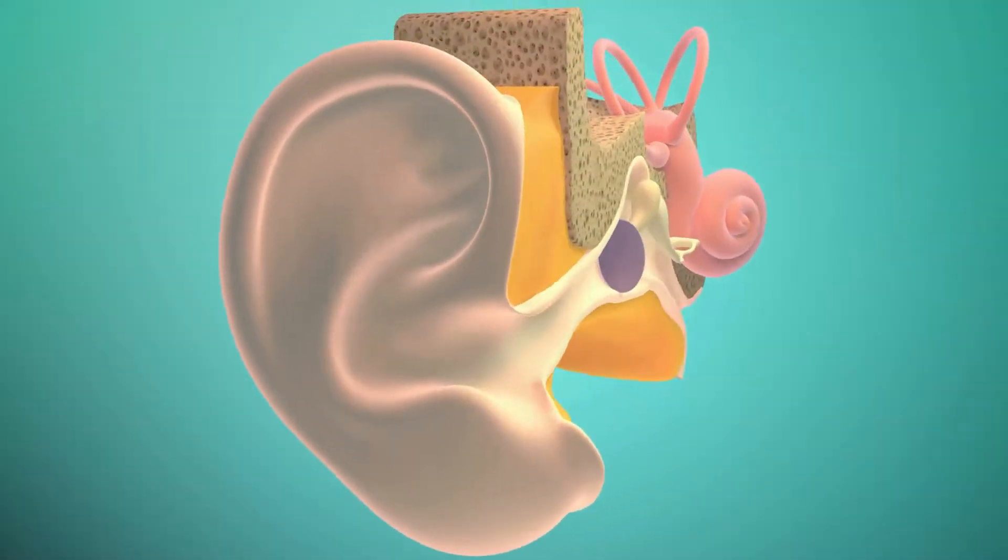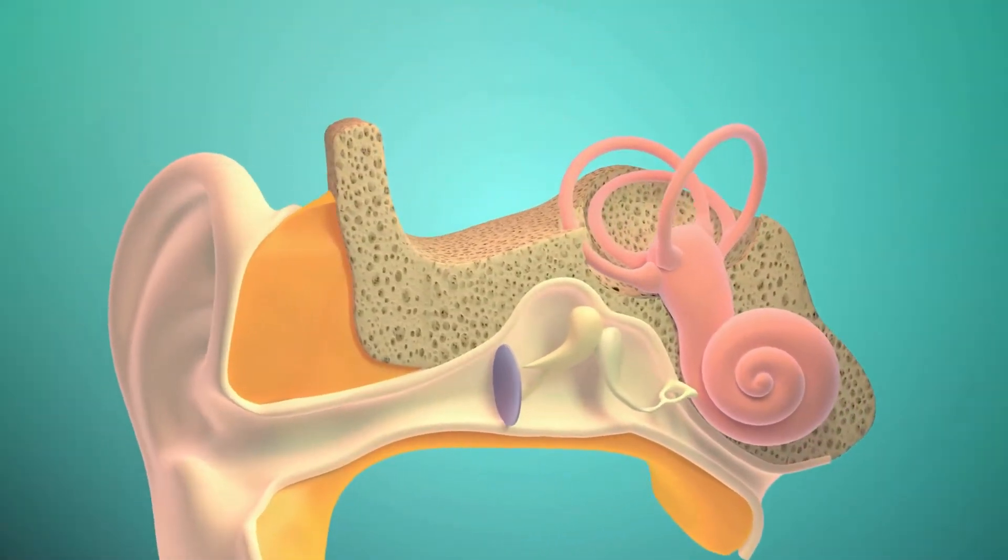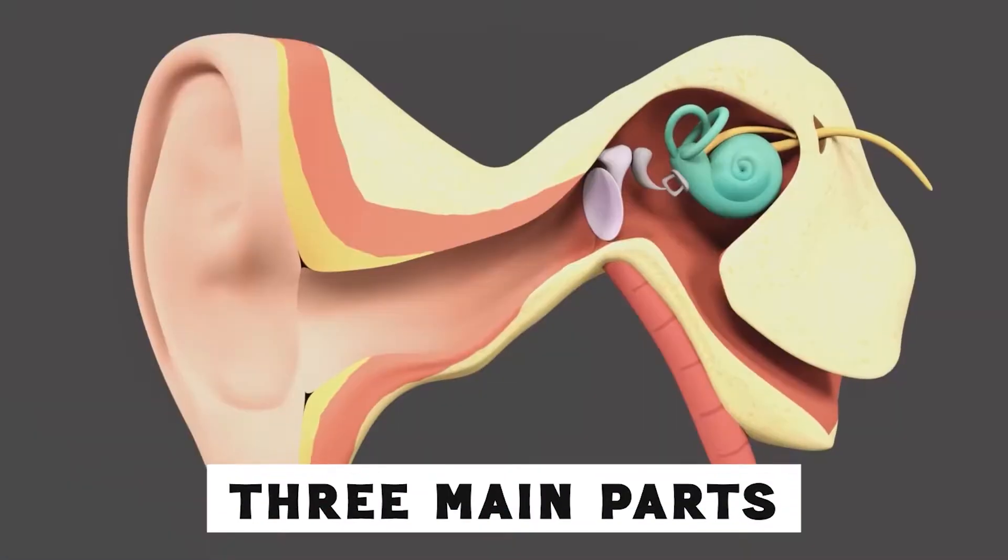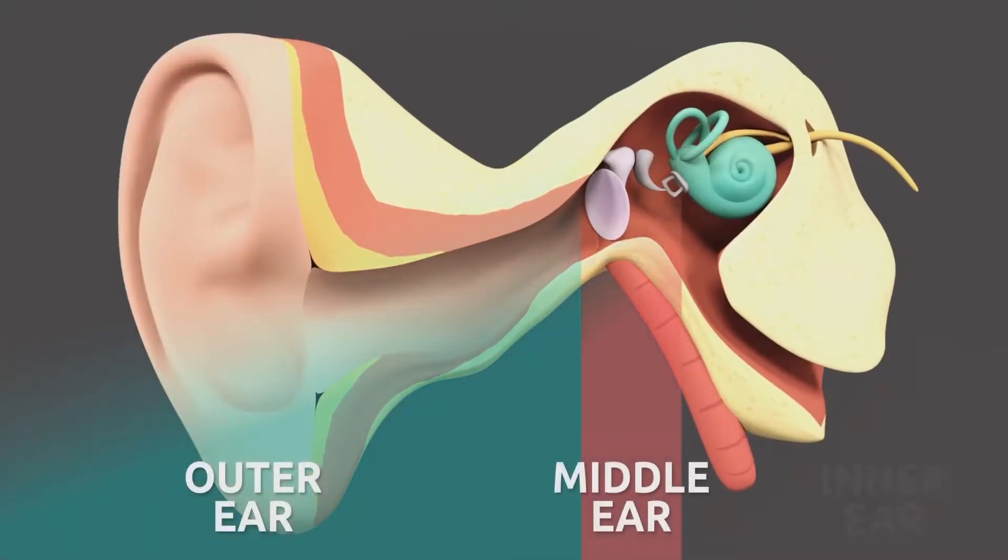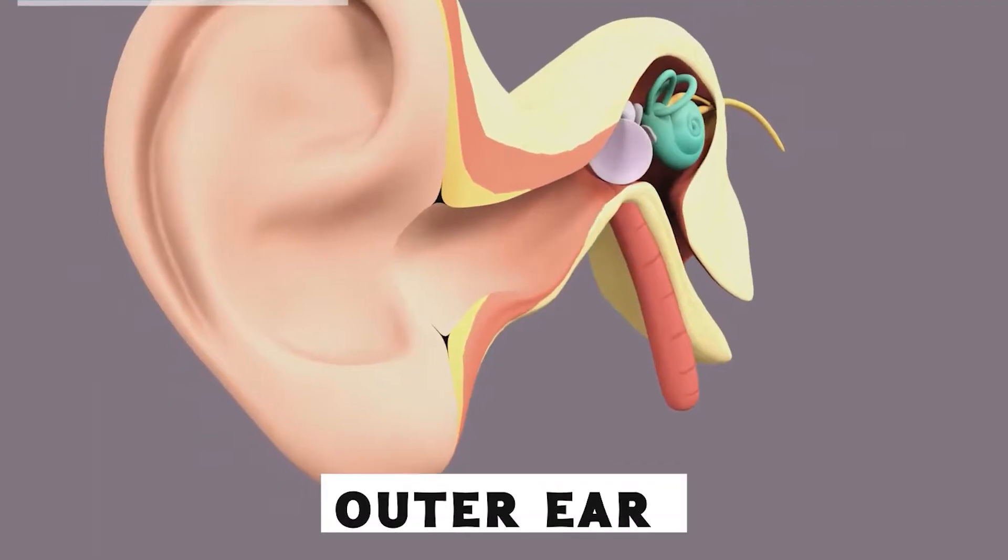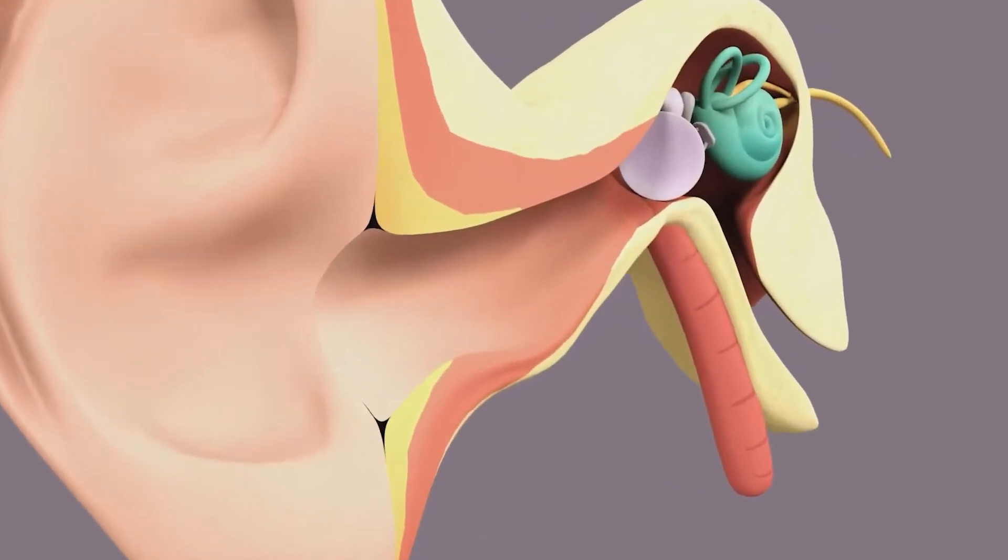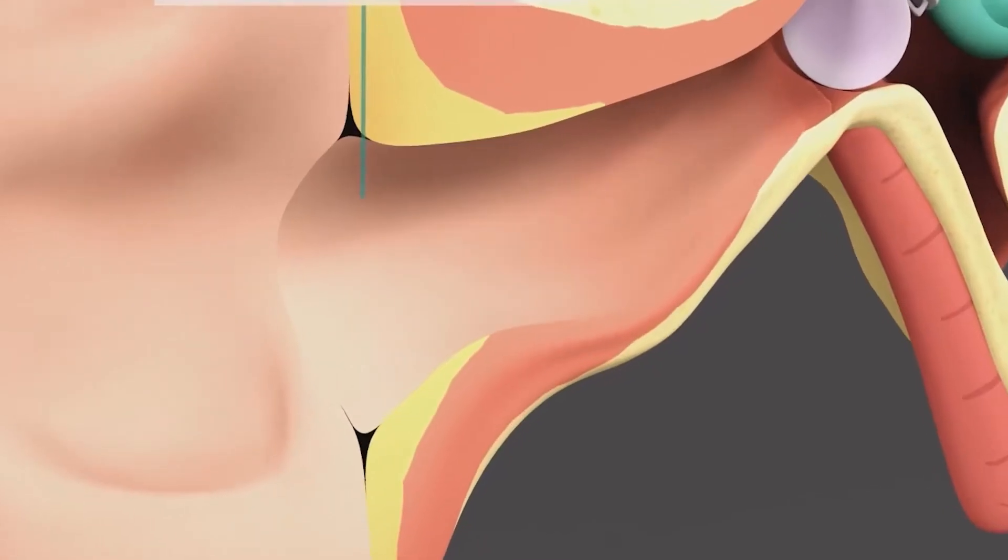Our ears are like finely tuned biological instruments made up of three main parts: the outer ear, the middle ear, and the inner ear. The outer ear catches sound waves and ushers them into the ear canal.